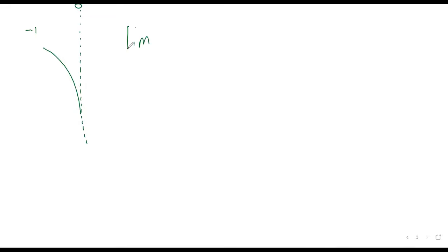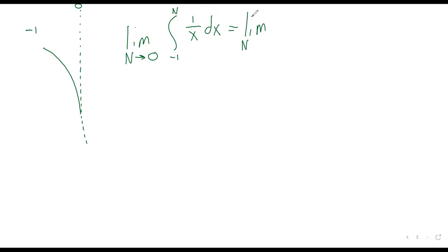We take the limit as n approaches zero from the left of the integral from negative one to n of 1/x dx. We did a really complicated integral with partial fractions yesterday, but I selected an easier example this time. One over x is an integral we should just be able to take—it's the natural logarithm.